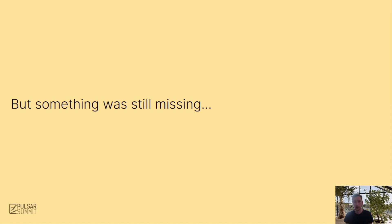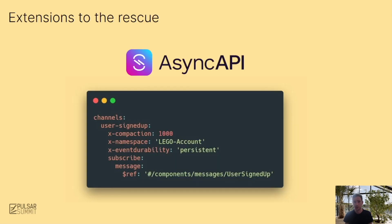With all that in place, we were in a good space, allowing full self-service control without hindering development, but rather improving it through automation. However, something was still missing. How do we configure certain Pulsar settings that the specification doesn't specify, like persistence and compaction or even retention configuration? Luckily, AsyncAPI has something called extensions, which is basically a property x-dash-some-key and a value. As these are first-class citizens of the AsyncAPI specification, it seemed like a good solution, so we ended up using them to express these different Pulsar configurations.